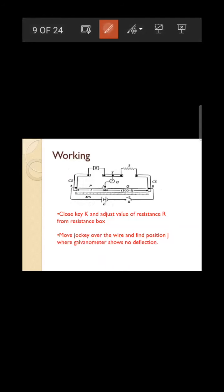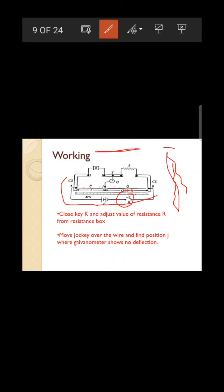For working: close key K so that current from the external circuit enters the potentiometer (meter bridge). A jockey is moved over the wire — you must just touch (not scrape/drag) the jockey on the wire — to find the point where the galvanometer shows zero deflection.